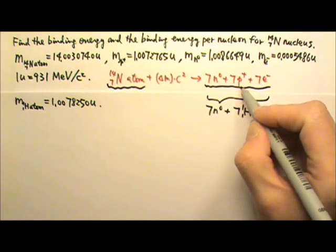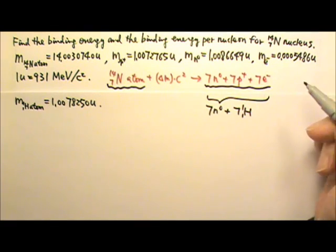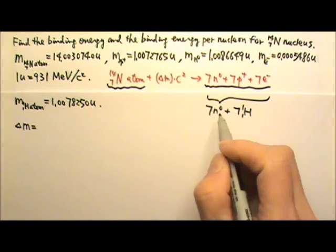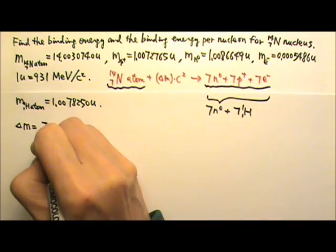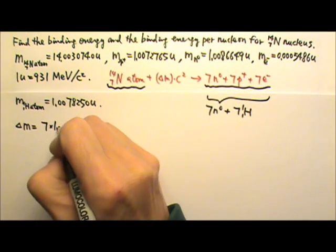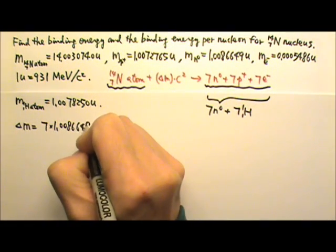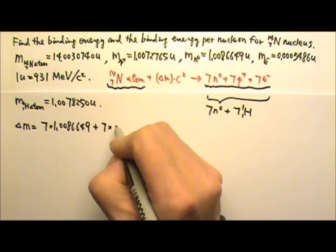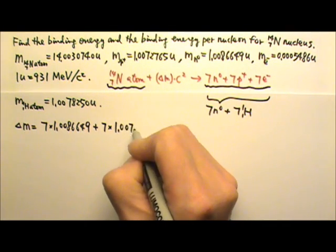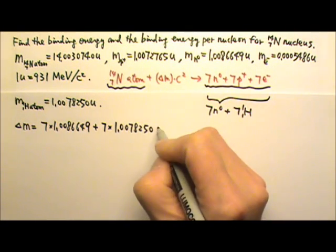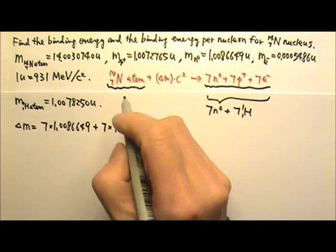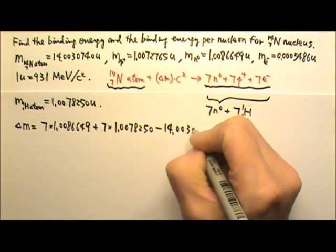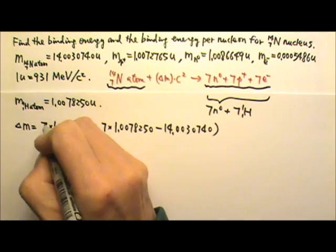So on this side, it's going to be 7 neutrons plus 7 H-1-1s. We're using a H-1-1 to substitute for a proton and an electron. So the delta M is still the heavier side minus the lighter side. So 7 neutrons, 1.0086649U, plus 7 hydrogen-1-1s, 7 times 1.0078250, minus the nitrogen atom, which is 14.0030740.